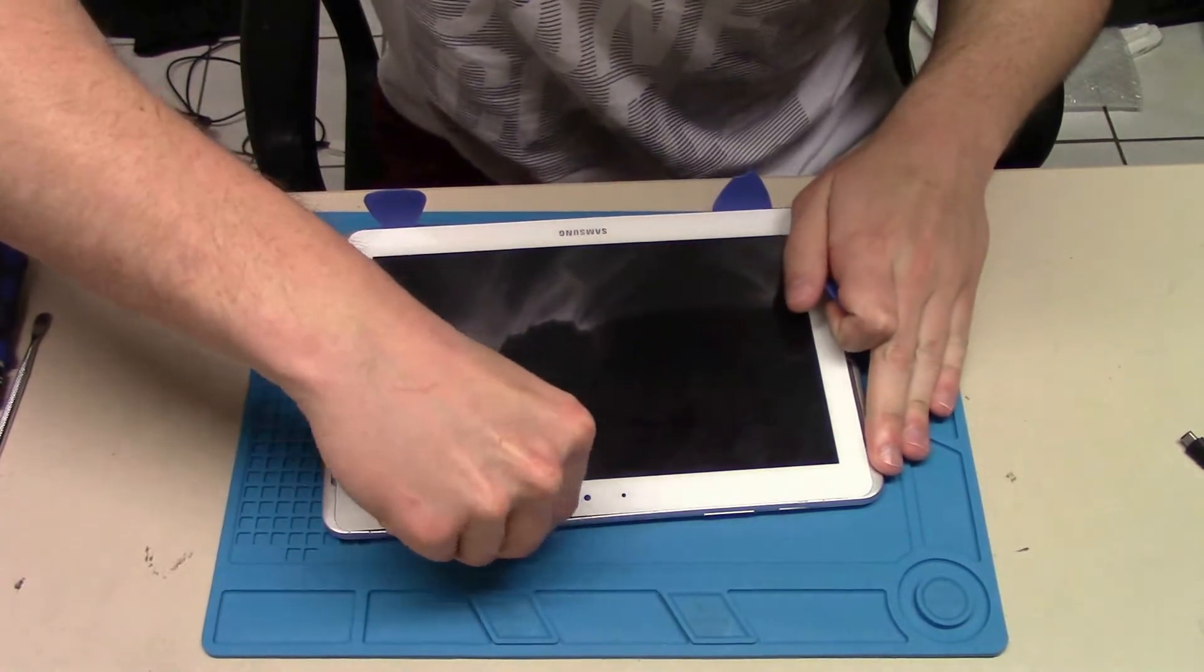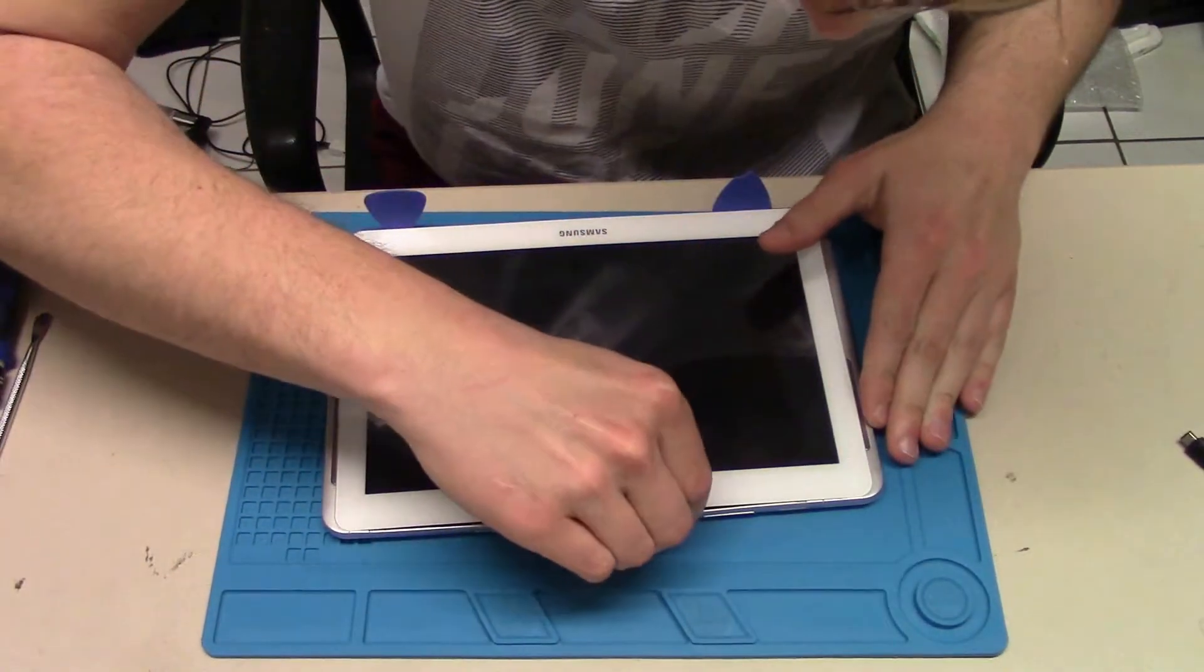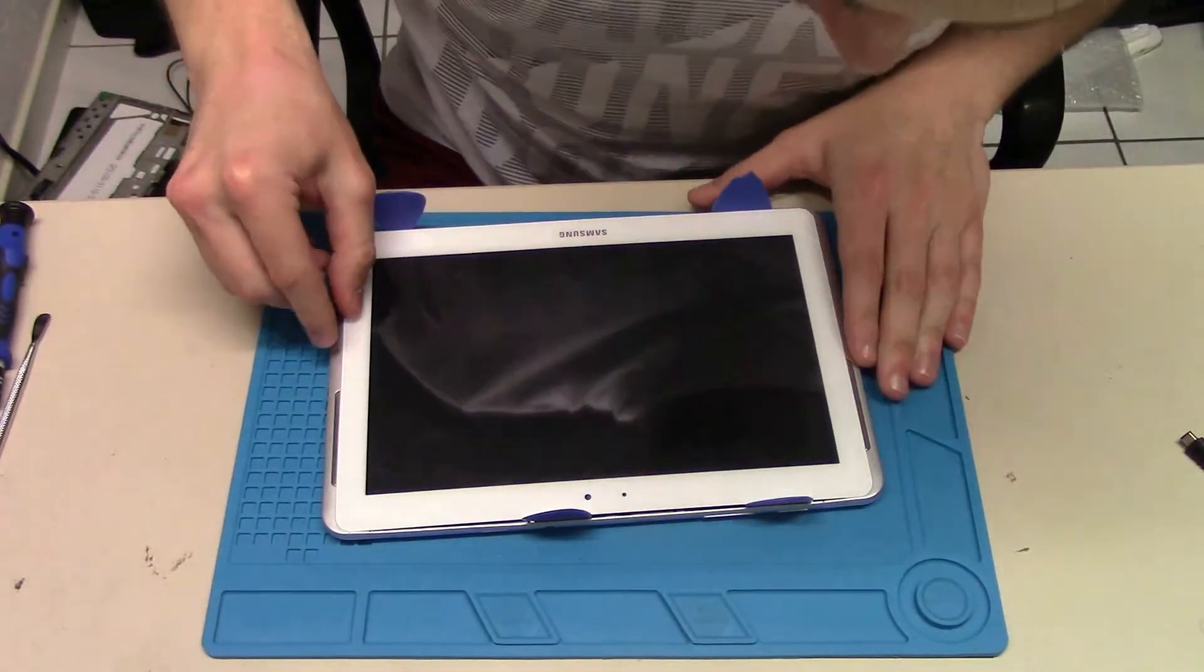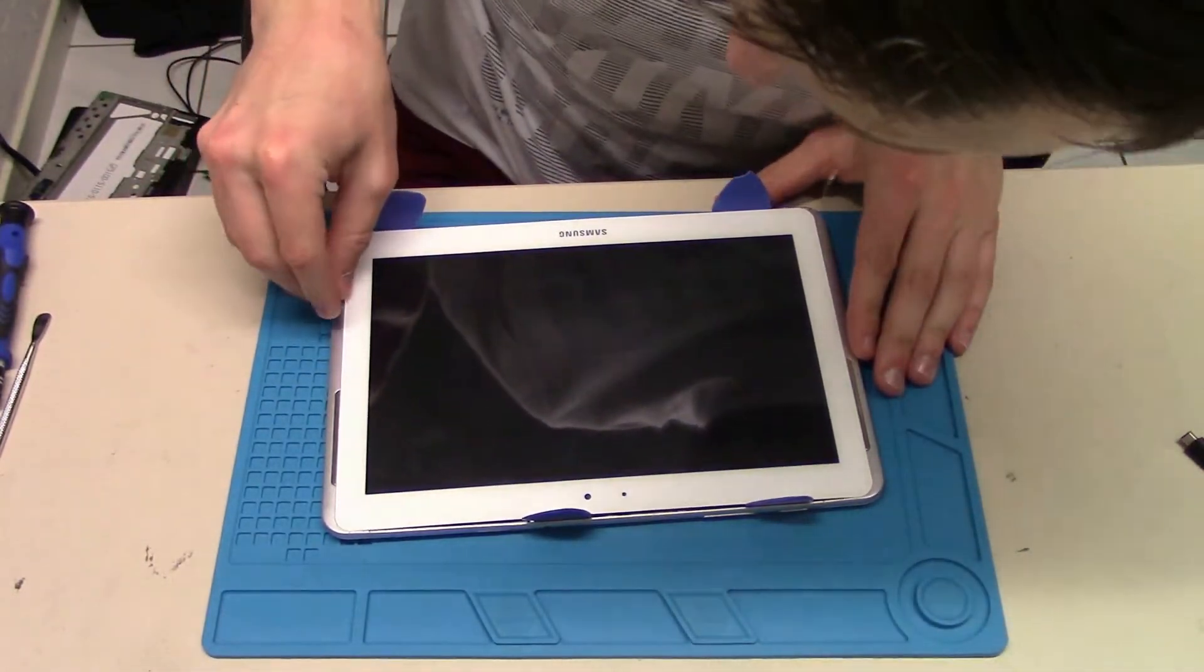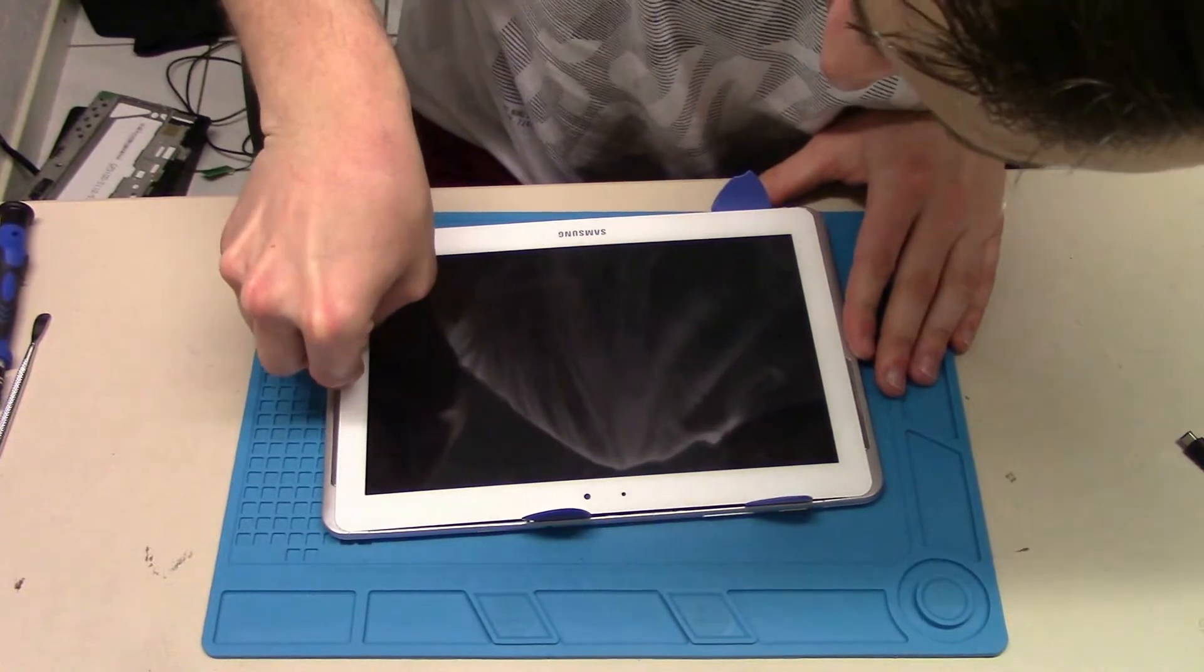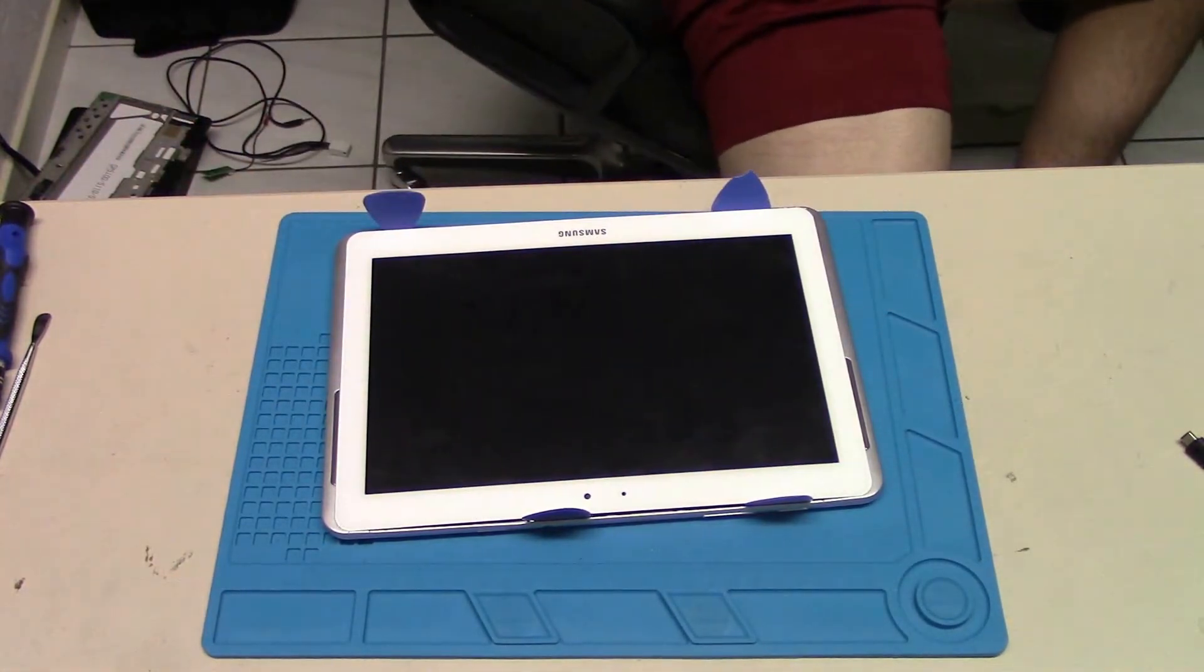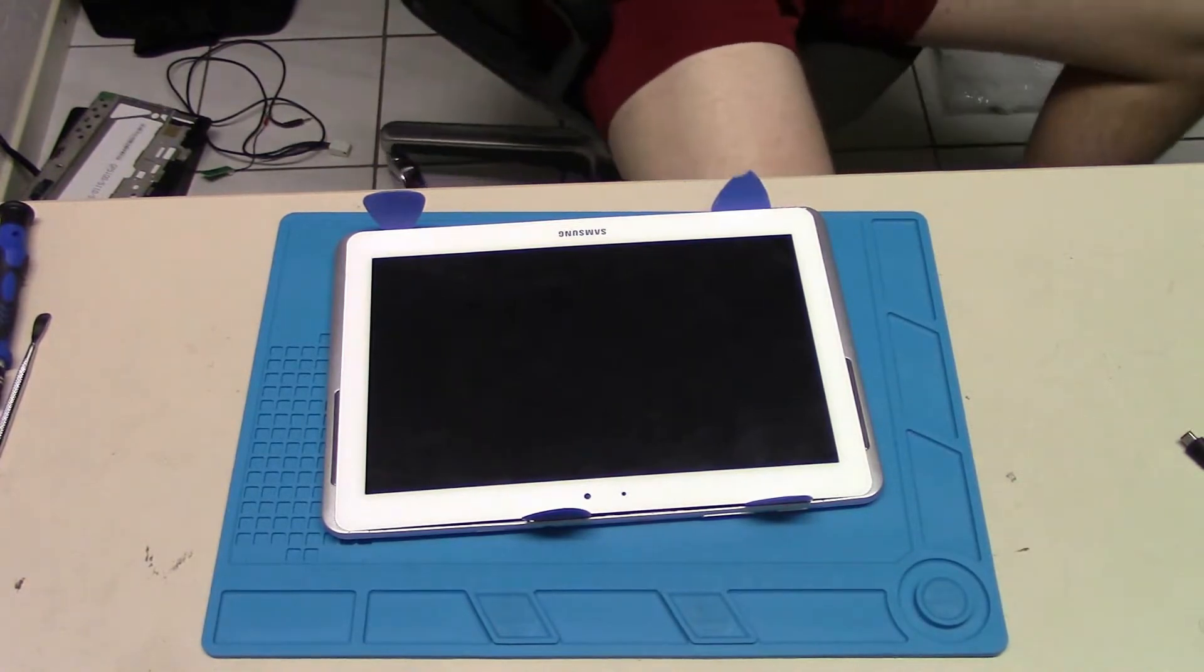Before you try to remove it, remove any SD or SIM cards and be careful at the borders because there is this clipping. It's difficult, maybe you need the metal spudger to clip off the back housing from the display frame.